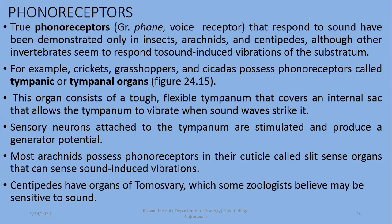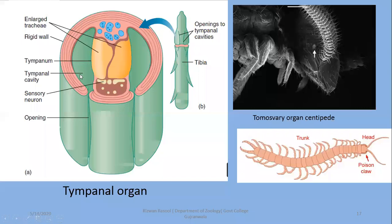For example, crickets, grasshoppers, and psychedras — types of closely related arthropods — possess phonoreceptors called the tympanic or tympanal organ.